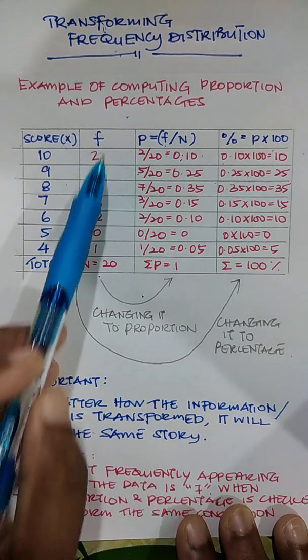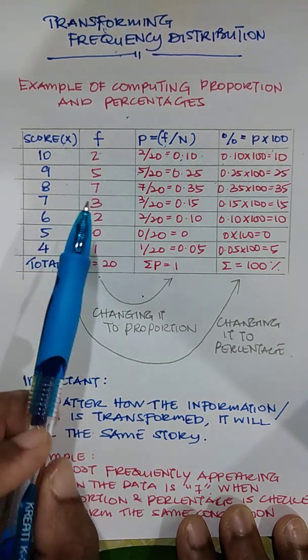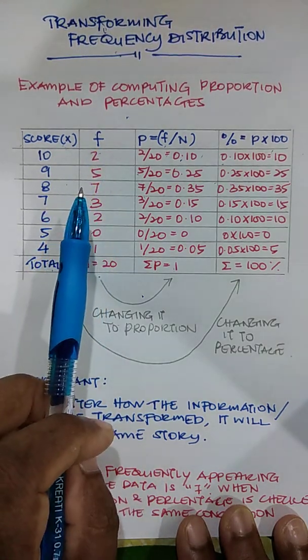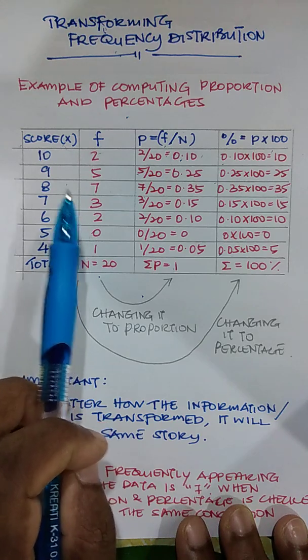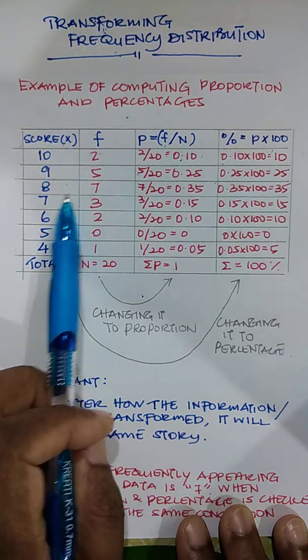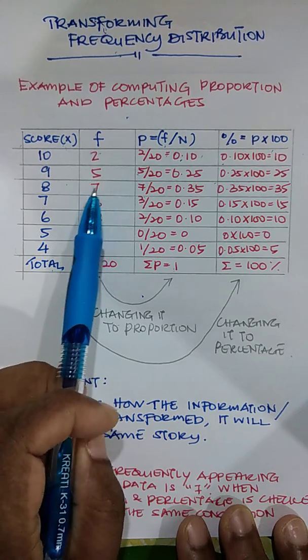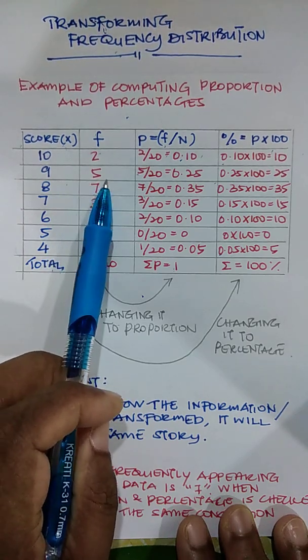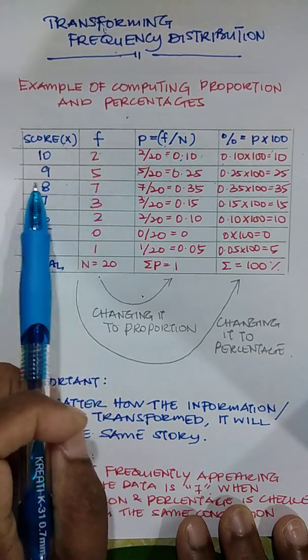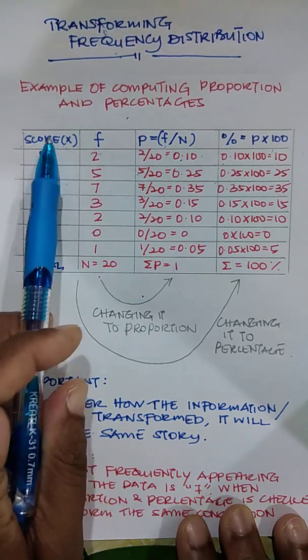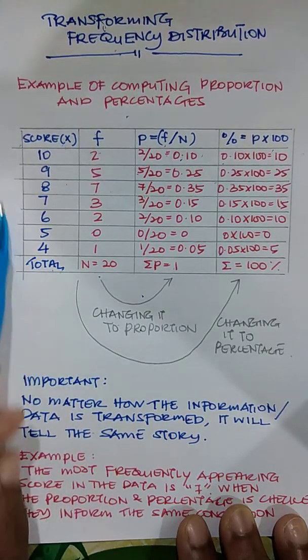What does that mean? Based on the frequency, what is the most occurring or most frequently observed score? It is score 8 because it has the highest frequency, number 7. So it's 7 times that number 8 appears in the data set.